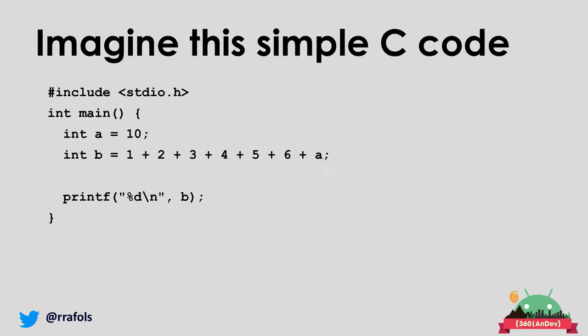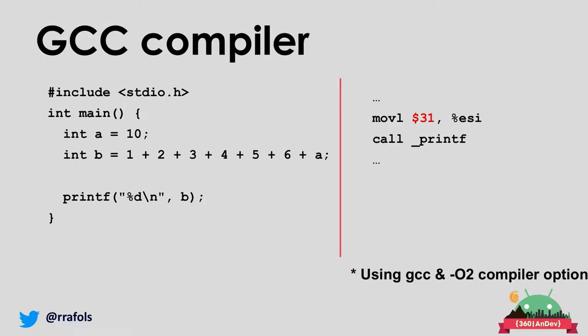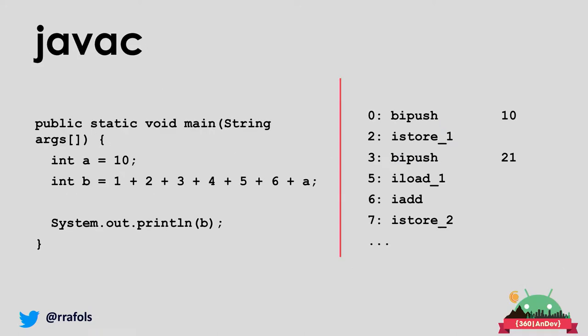Let's see a simple C code example. We compile with GCC using the -O2 flag and GCC simply outputs 31 — it figured out the result at compile time. What happens with Java? It pushes 10 onto the stack, stores it, pushes 21, loads the stored value, adds them, and stores again. A C compiler can make two assumptions: first, 'a' is not used anywhere in this scope so there's no point storing and loading it again; second, just add them directly.